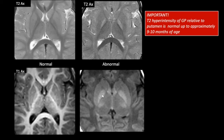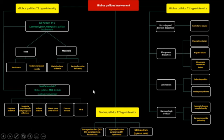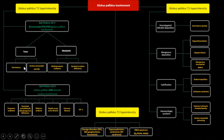Therefore, when you see this finding in this age group, it's important to do a follow-up MRI. This is an algorithm to help narrow down the differential diagnosis when you see abnormal globus pallidus signal. In the case of T2 hyperintensity isolated to the globus pallidus, think of toxic and metabolic etiologies. Toxic etiologies include chronic kernicterus and carbon monoxide toxicity. Metabolic etiologies include methylmalonic acidemia and creatine deficiency. If there is involvement of the globus pallidus and dentate nucleus, think of organic acidemia such as propionic acidemia, SSADH deficiency, MSUD, Canavan disease, and NF1.